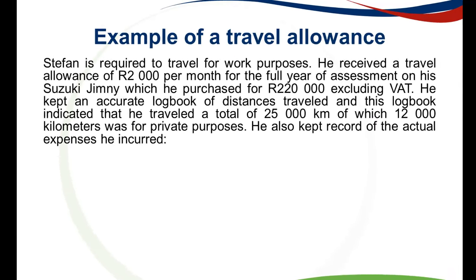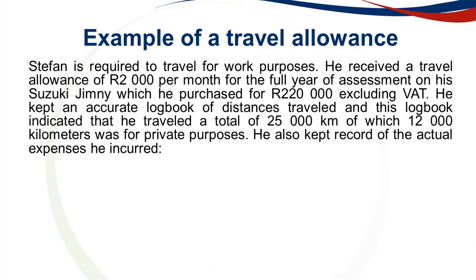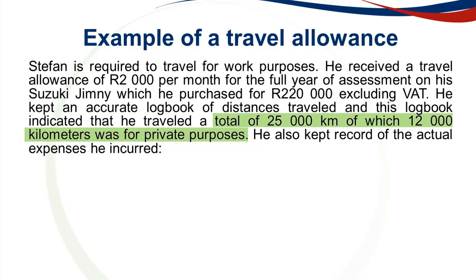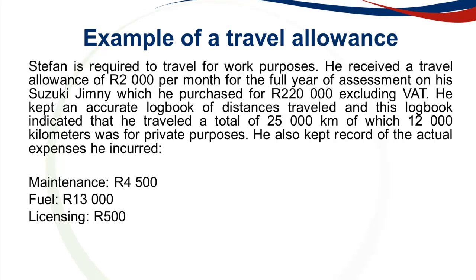Let's work through an example. Stefan is required to travel for work purposes. He received a travel allowance of 2,000 Rand per month for the full year of assessment — 12 months — on his Suzuki Jimny, which he purchased for 220,000 Rand excluding VAT, excluding finance charges. He kept an accurate logbook showing a total of 25,000 kilometres, of which 12,000 kilometres were for private purposes. He also kept records of actual expenses. If a person does not keep records of actual expenses, you skip step 2 and only use the deemed cost.